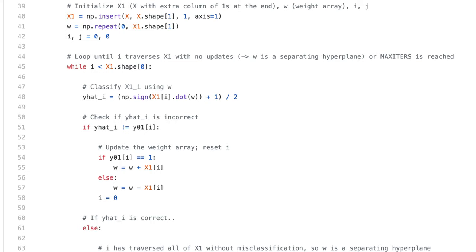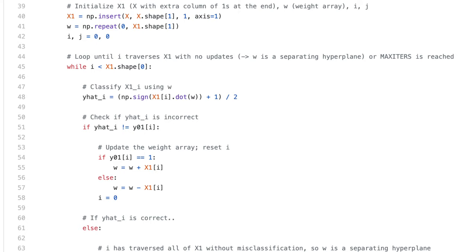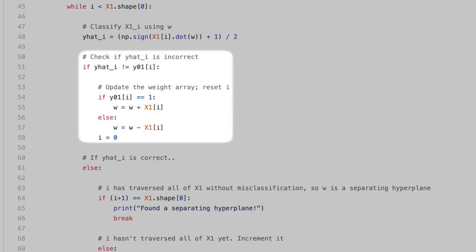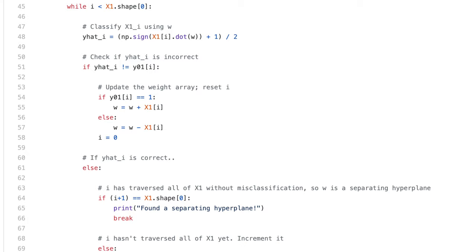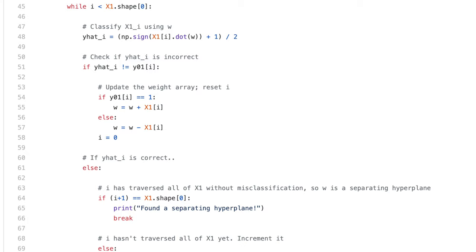I use a while loop with two indexers, i and j. i iterates over the rows in x, searching for a misclassified sample, and j keeps track of the total number of iterations. y hat i is the label assigned to xi by the current hyperplane. If y hat i doesn't equal the true label for the ith sample, then I update w as either w plus xi or w minus xi, depending on whether the true label is positive. And as soon as I make a weight update, I reset i back to 0 so the program goes back to the beginning of x, searching for a misclassified point using the updated weight vector.